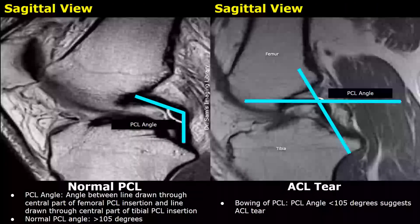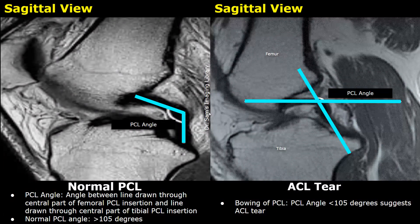This is another example showing PCL angles. In the normal case, it will be more than 105 degrees. In cases of ACL tears, due to the change in shape and alignment of the PCL, the PCL angle will change and will be less than 105 degrees.